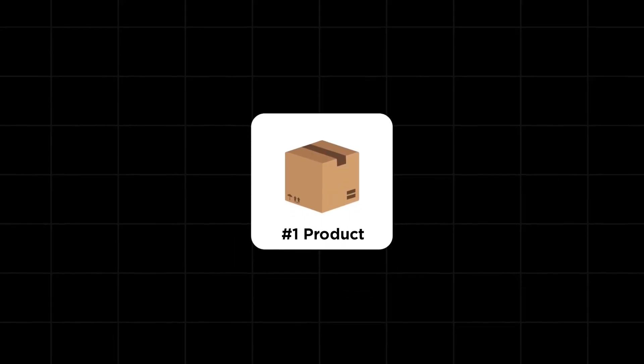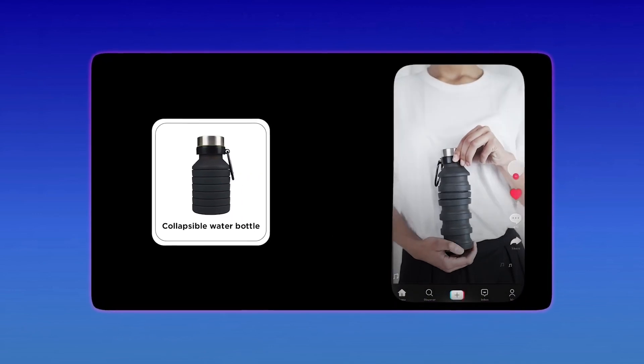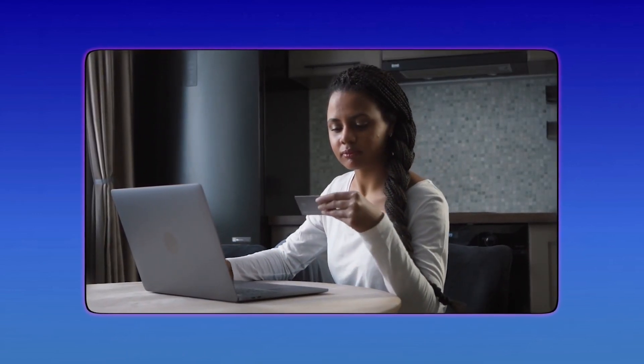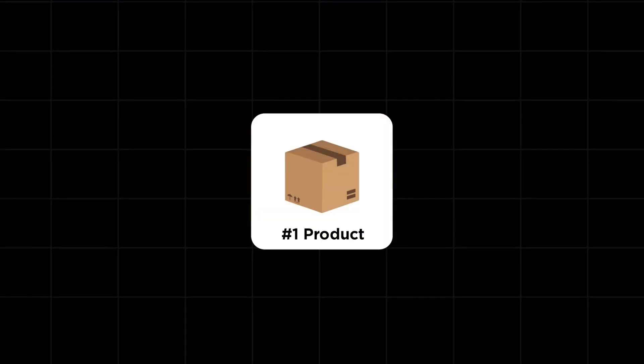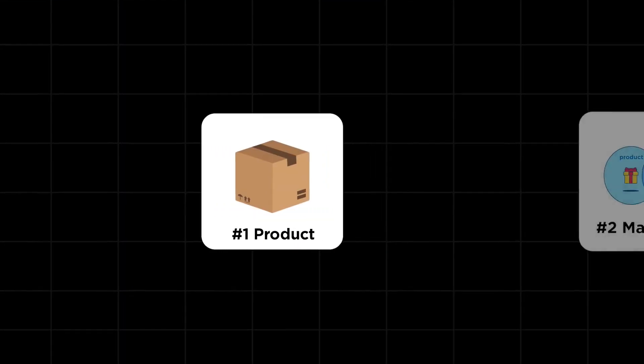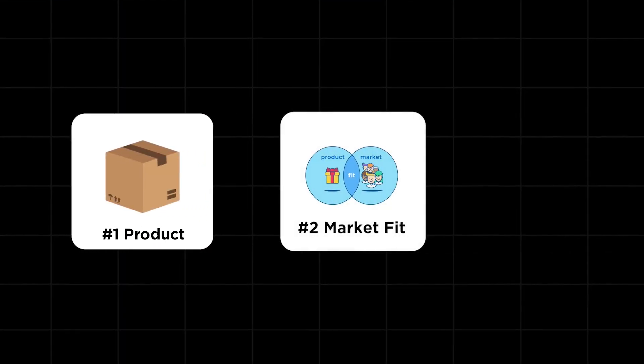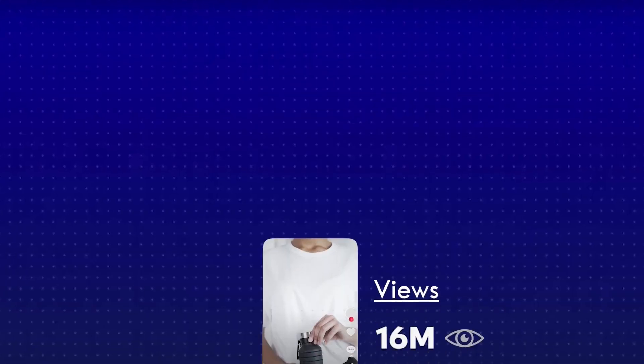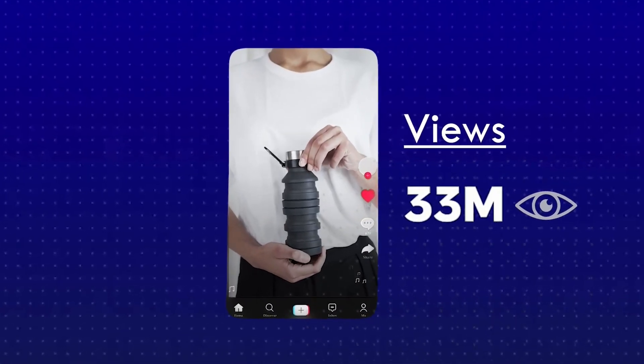I'm going to show you how it works. The first thing you want to start with is the product, because it doesn't matter how good your video is — if nobody wants to buy the product and it's not in-demand, it doesn't matter. So first you start with the product. Then you want to consider product-market fit, because if you have a great product and a great video but you're pitching it to the wrong audience, the initial people it's being suggested to aren't going to be interested. So you need a proven product and product-market fit.